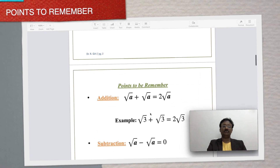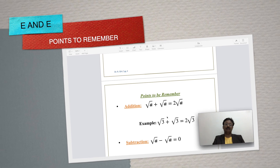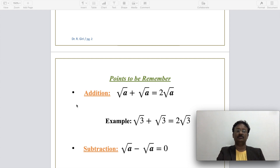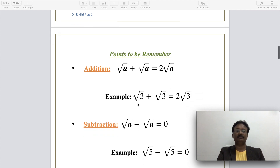Four basic operations are necessary for solving all problems under this topic. For addition: the square root of a plus the square root of a equals 2 times the square root of a. For example, the square root of 3 plus the square root of 3 is 2 times the square root of 3.